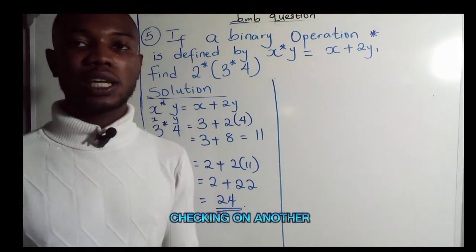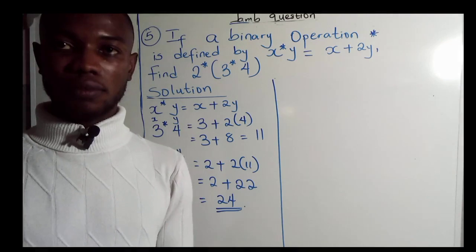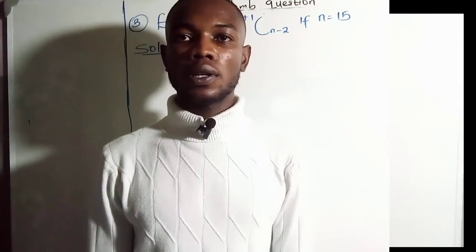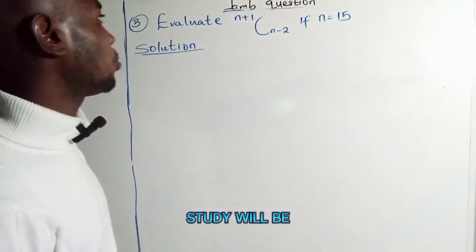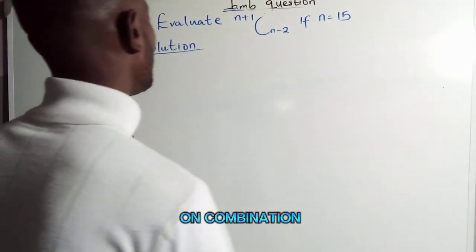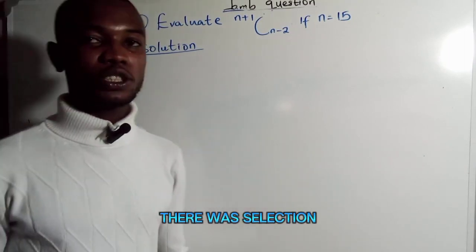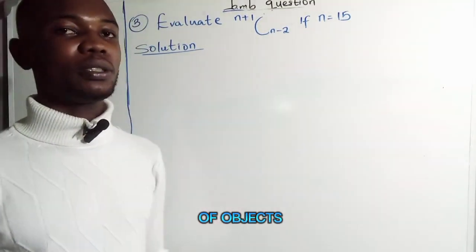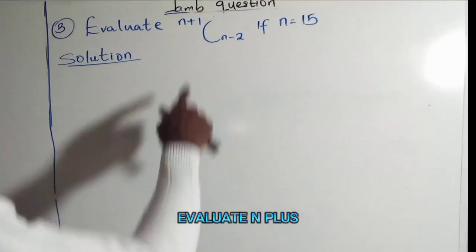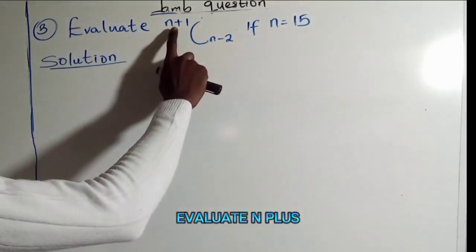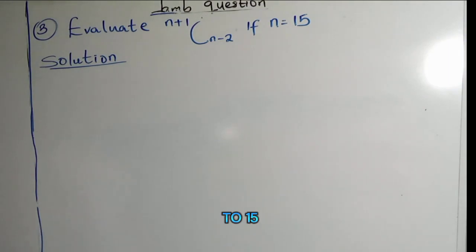Now we are going to check on another question so stay calm. In this next part we'll be looking at combination. We need to evaluate (n+1) combination (n-2) if n equals 15.